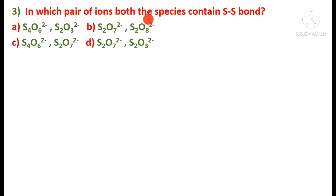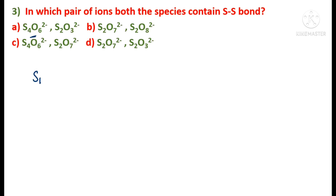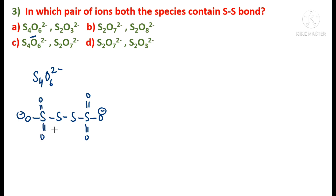Next question: in which pair of ions do both species contain an S–S bond? We are provided with different ion pairs. To answer this, we need to know the structures of each ion. Let's examine S₄O₆²⁻ first — its structure contains four sulfur atoms, and yes, it has an S–S bond.